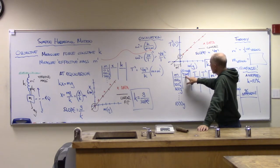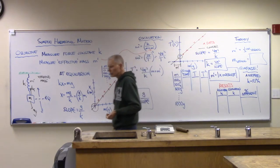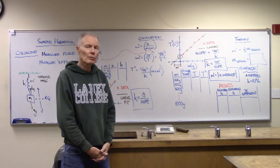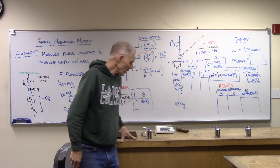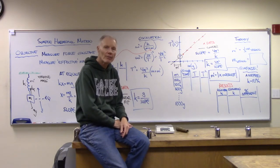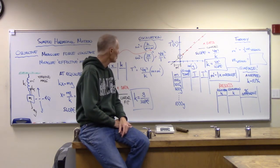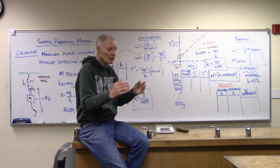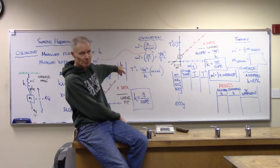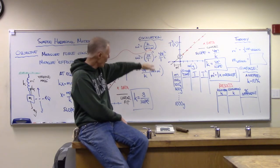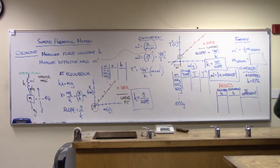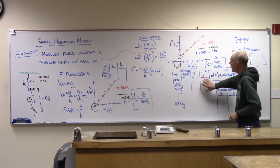We can measure the period of oscillations, but one measurement might have significant uncertainty. So we'll measure 10 cycles — the cycles themselves are a few seconds, so measuring something like 20 seconds and dividing by 10 helps with precision. We take that total time, divide by 10, and that gives the period. The formula uses T², so I add a column to the data table and square each period value.